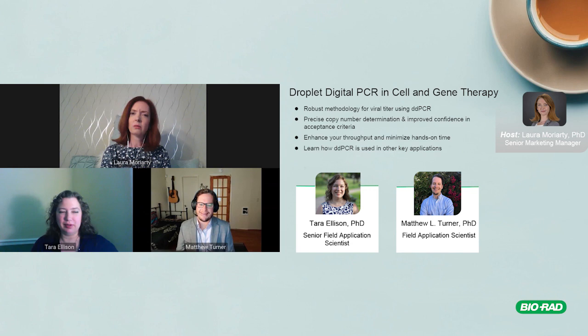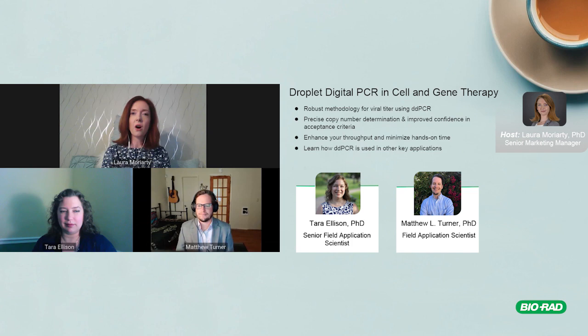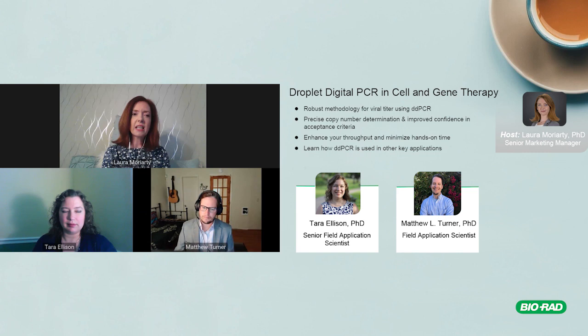Matt is a biochemist and structural biologist by training and has utilized PCR for molecular cloning of multiple target proteins, verifying insertions and mutations by qPCR. Since joining Bio-Rad he's been supporting and training people working on viral vector R&D and manufacturing, specifically helping with viral titer optimization and sharing best practices and tips and tricks.